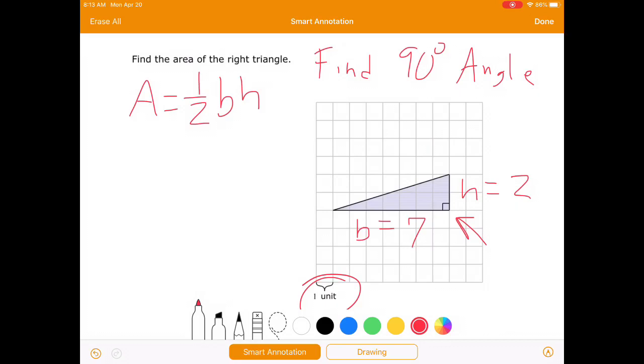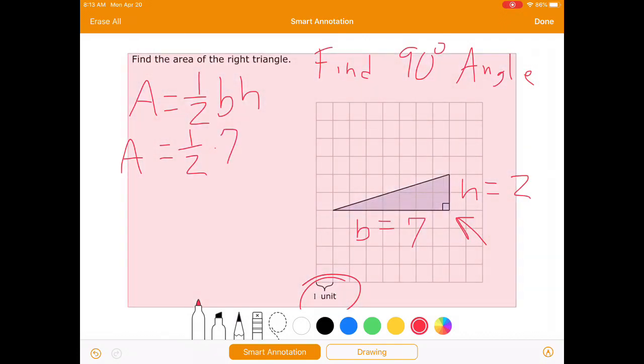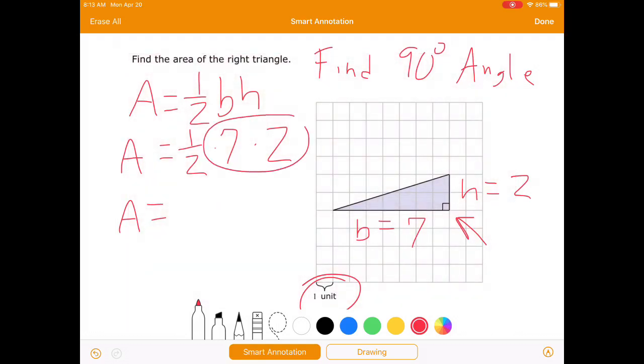And formulas are an algebraic expression or equation. So we just have to substitute the known values. So b equals 7, so we'll put 7 in for b, and h equals 2. So we'll put 2 in for h, and just follow the order of operations. Now, with multiplication, we're allowed to do it in any order that we want. I think this is super easy. 7 times 2 is 14, and a half of 14 is 7. So this one would be 7 square units.